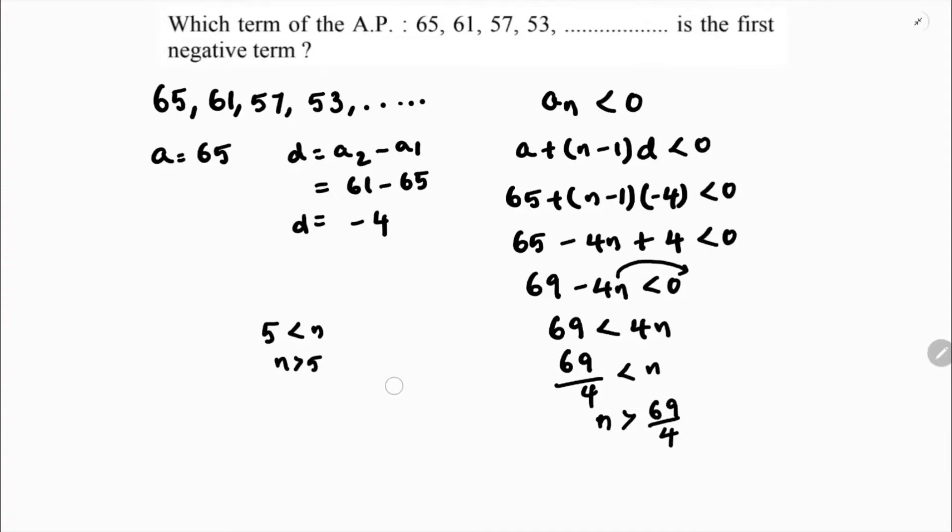So here, 69 divided by 4 will give 17.25. So n is greater than 17.25.